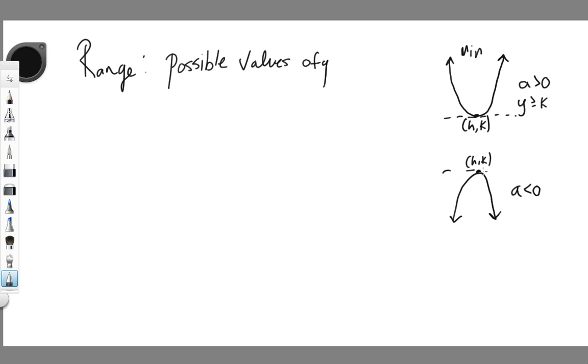And in a case like this, everything is below that value. So this would represent a maximum point. The k value of your vertex is actually the maximum. So y would be less than or equal to k. Everything is less than that value of k.